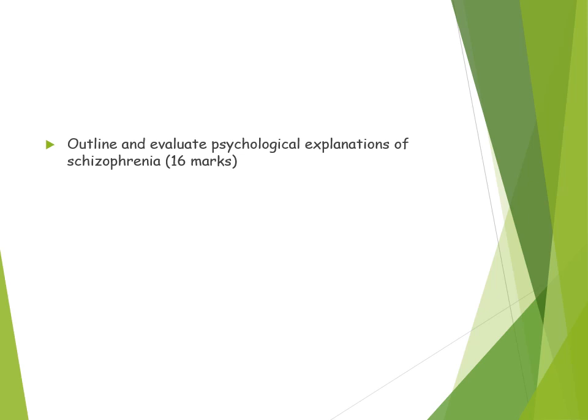For a 16-mark question — 'outline and evaluate psychological explanations of schizophrenia' — because it says 'explanations' (plural), you need to discuss more than one. You could talk about family dysfunction and cognitive explanations as two psychological explanations. Remember it is marked holistically, but there is more weighting towards evaluation, so spend longer on your evaluation than your outline. In terms of suggested structure, approximately two AO1 paragraphs covering family dysfunction and cognitive explanation, and then about four evaluation points.